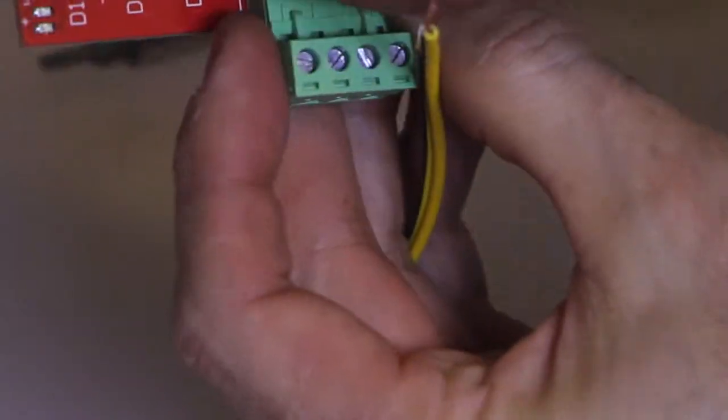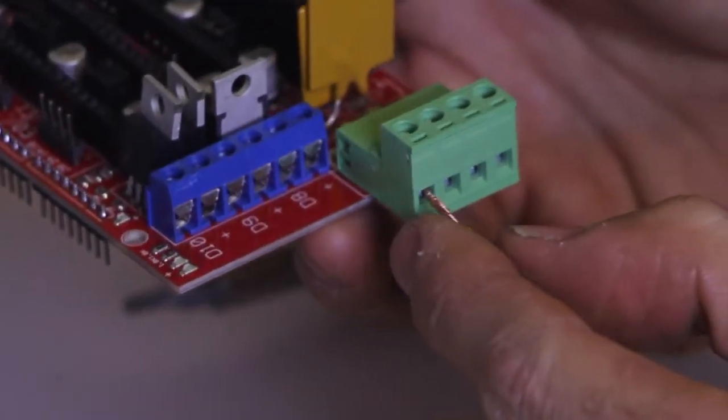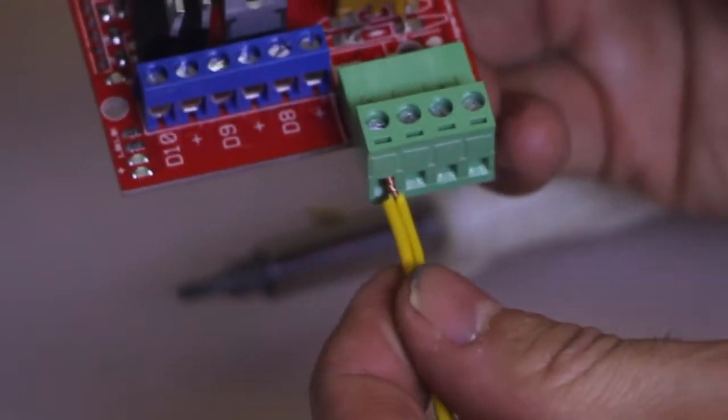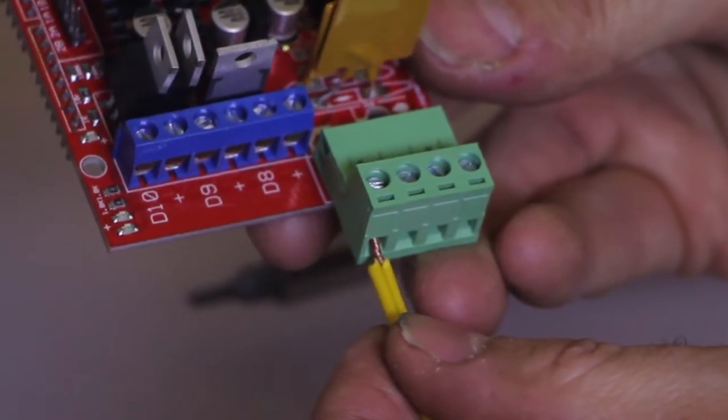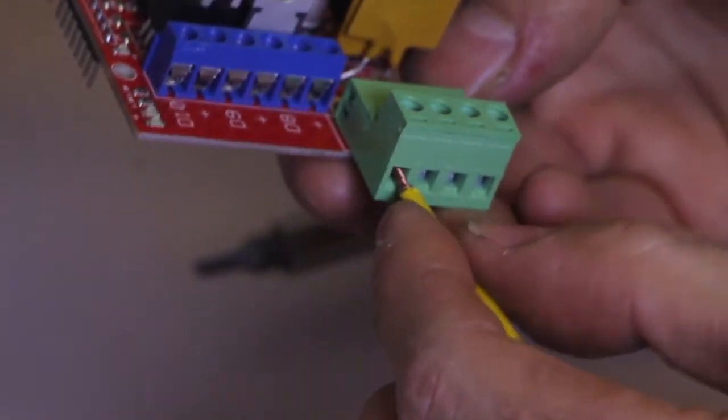So the plus and minus is marked on the board. You can see a little plus and minus there. We're just going to plug the plus into the top. Now I'll show you how not to do it. The conductors are too long, you can see it's hanging out the end of the connector. That's very bad, because over time they can short out if someone moves it. So we're going to trim that back.